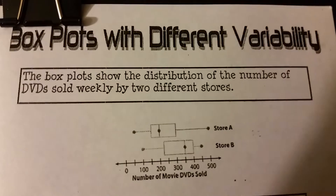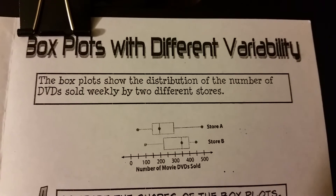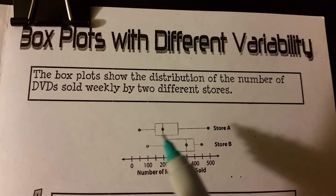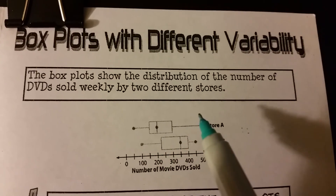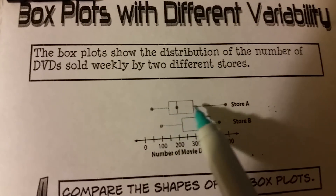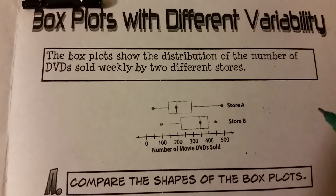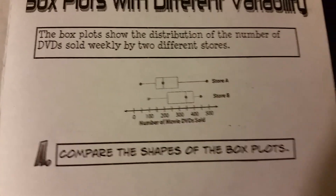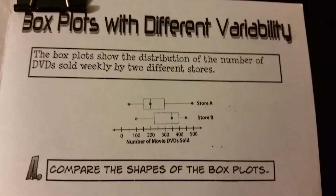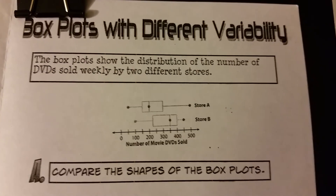Now we're going to do an example with different variabilities. The box plots show the distribution of the number of DVDs sold weekly by two different stores. Here we have a shift in the data — the interquartile ranges are a little different. This shows Store A and Store B's number of movie DVDs sold. We're going to do the same thing: compare the shapes of the box plots.